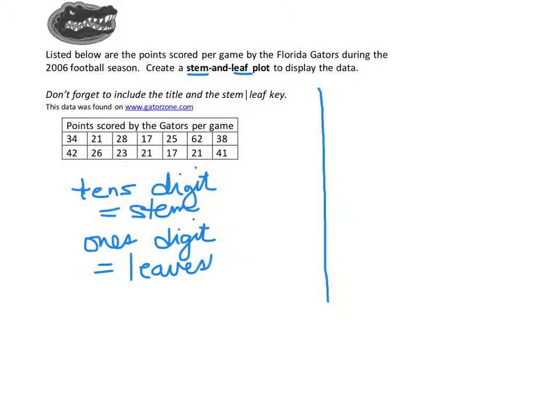The first thing that we need to do to be able to determine what the tens digits we'll need is to find the minimum and the maximum data value. We see here that the minimum data value appears to be 17, and the maximum data value appears to be 62. So that means we need our stem digits to go from 1 to 6.